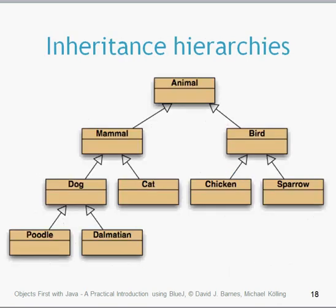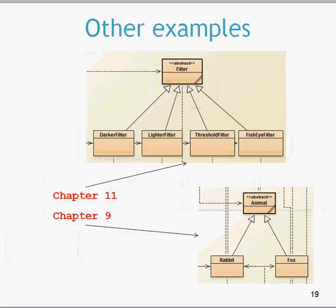Inheritance hierarchies are throughout nature and also throughout our code. For example, an Animal class has attributes like size and weight. A Mammal or Bird subclass also has size and weight but adds extras - Bird might have beak length, Mammal might have different attributes. Going deeper, Mammal has Dog and Cat subclasses, and Dog has Poodle and Dalmatian subclasses. In chapter 9 we'll use an Animal hierarchy with Rabbit and Fox classes, and chapter 11 uses a class hierarchy for image filtering.